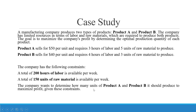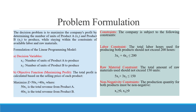The company wants to determine how many units of Product A and Product B it should produce to maximize profit given these constraints. The decision problem is to maximize the company's profit by determining the number of units of Product A and Product B to produce while staying within the constraints of the available labor and raw material.